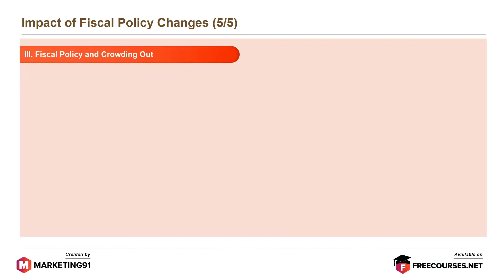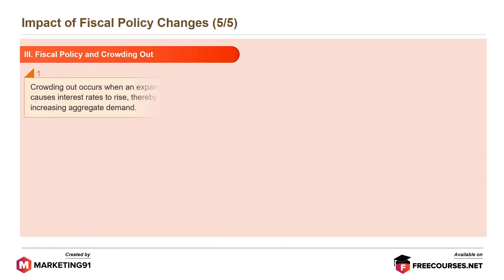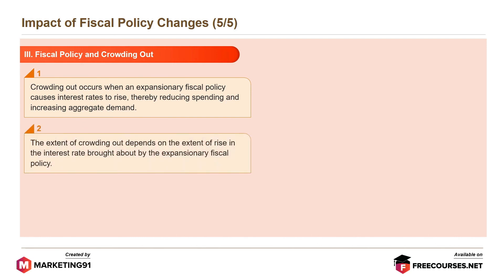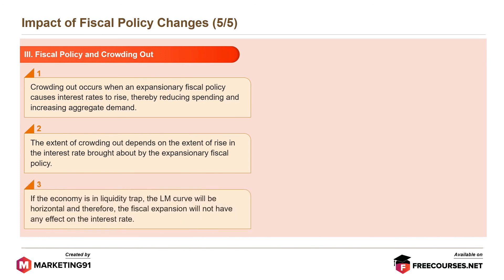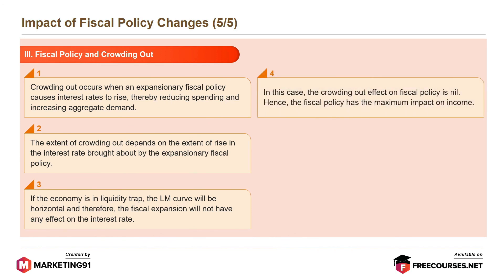The last impact is fiscal policy and crowding out. Crowding out occurs when an expansionary fiscal policy causes interest rates to rise, thereby reducing spending and increasing aggregate demand. The extent of crowding out depends on the extent of rise in the interest rate brought about by the expansionary fiscal policy. If the economy is in a liquidity trap, the LM curve will be horizontal and therefore fiscal expansion will not have any effect on the interest rate. In this case, the crowding out effect on fiscal policy is nil, and hence fiscal policy has the maximum impact on income.